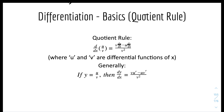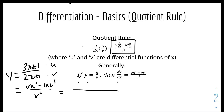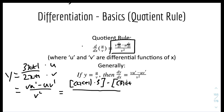The quotient rule applies to fractions. If y equals u over v, then dy over dx equals (v times u prime minus u times v prime) over v squared. For example, if y equals (3x plus 1) over (2x plus 1), set the top as u and the bottom as v. Then dy over dx equals (2x plus 1) times 3 minus (3x plus 1) times 2, all over (2x plus 1) squared, and you can simplify from there.